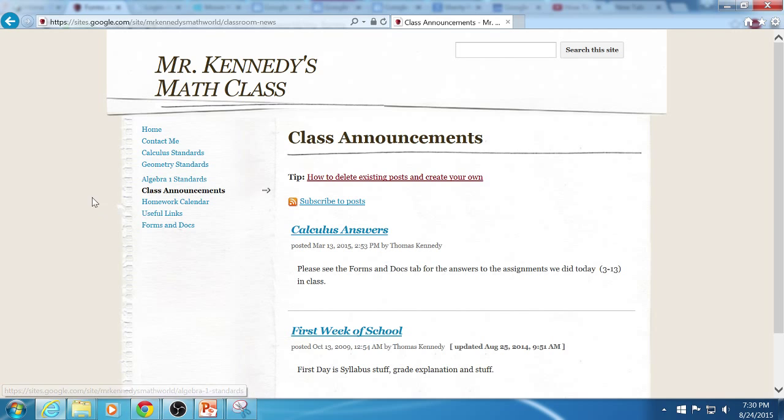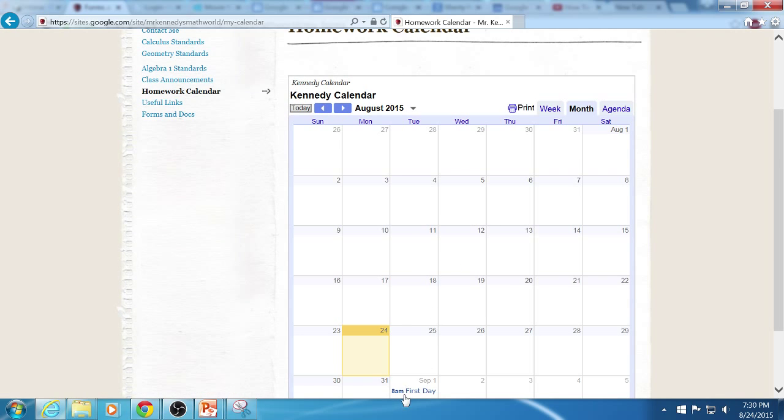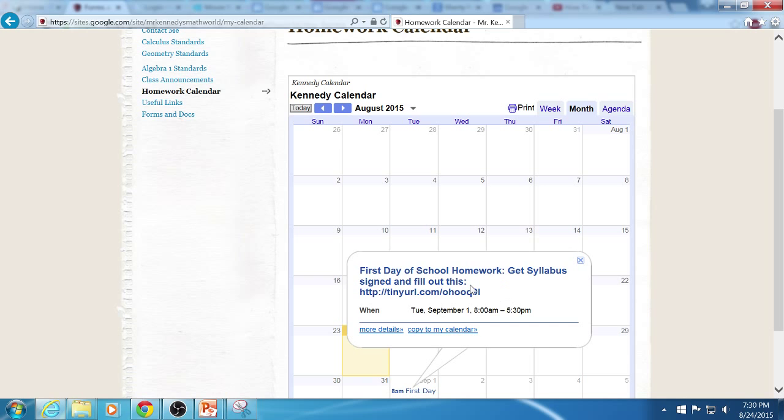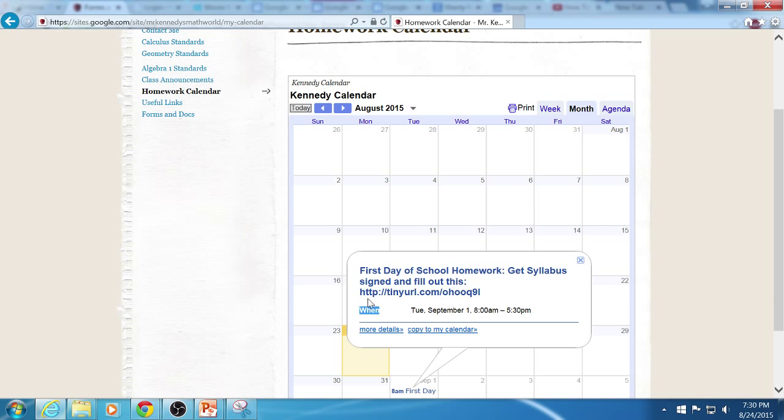The announcements tab has nothing really. Homework calendar tab is very useful. You can click on the first day of school and see that the homework is here. There's a link because I have an online questionnaire that you need to fill out, so you should be using this on the first day of school.